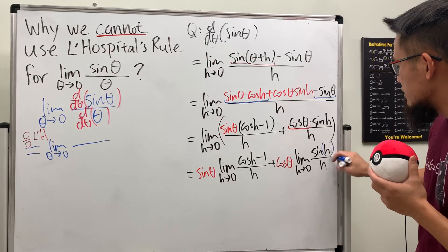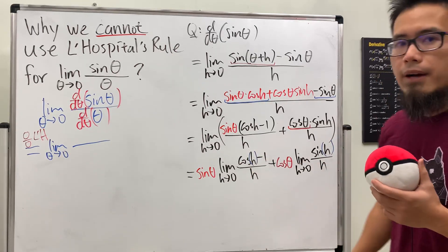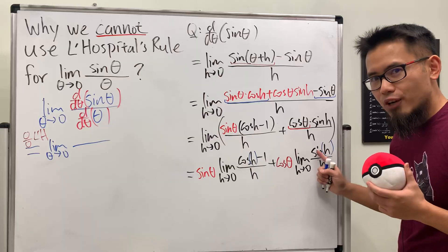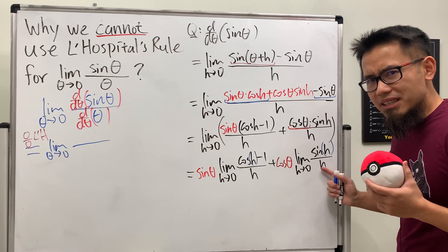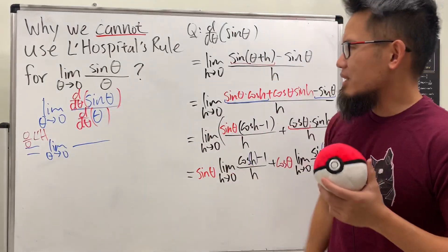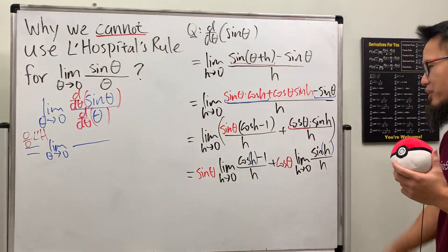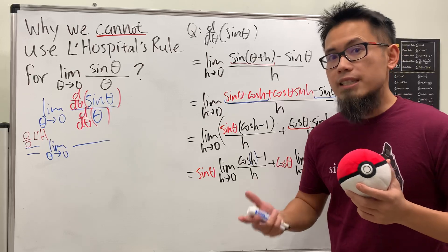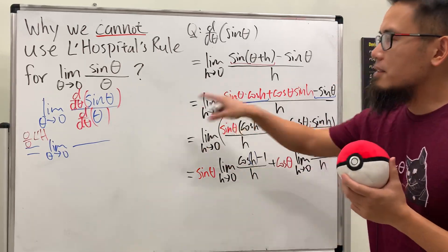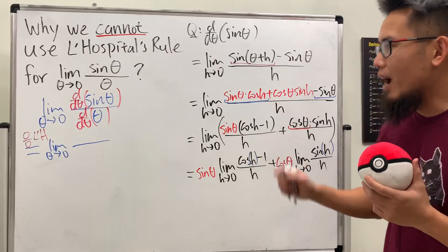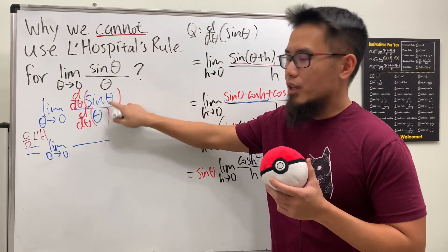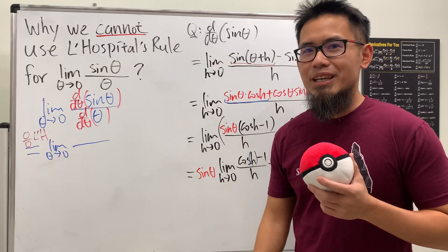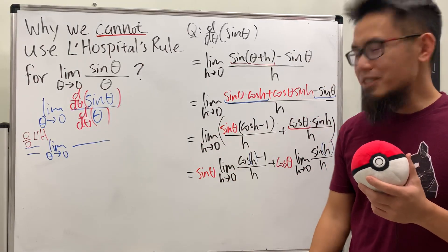Notice that this limit as h approaching zero of sin(h)/h — that is exactly what we are trying to find! It's the same limit, just using h instead of theta. And here's the problem: this is called circular reasoning. In order to figure out the original limit, you use the derivative of sine, but in order to find the derivative of sine, you actually need that limit in the first place.